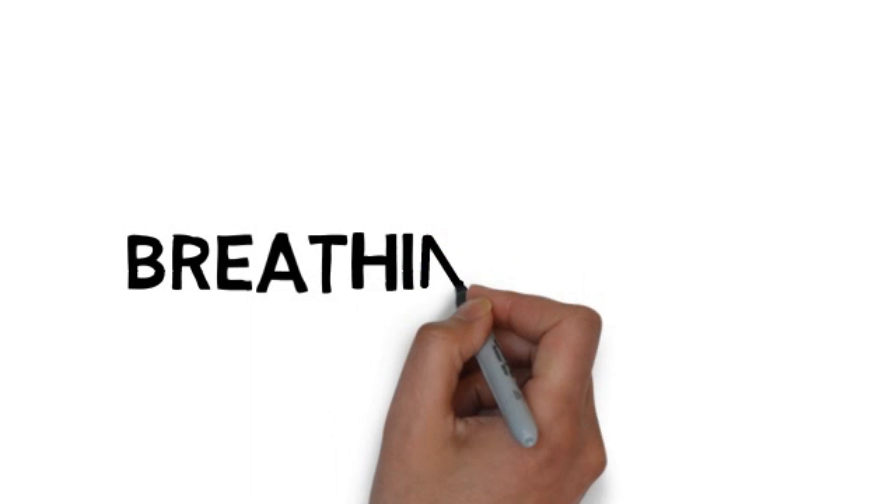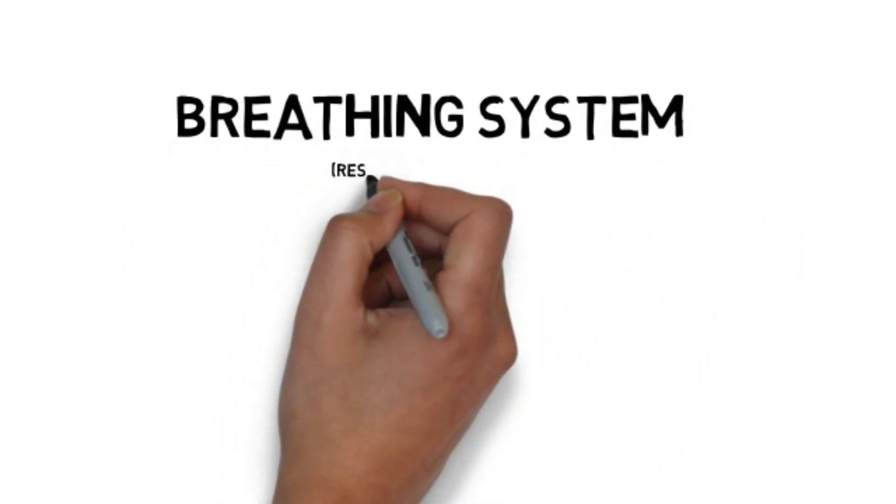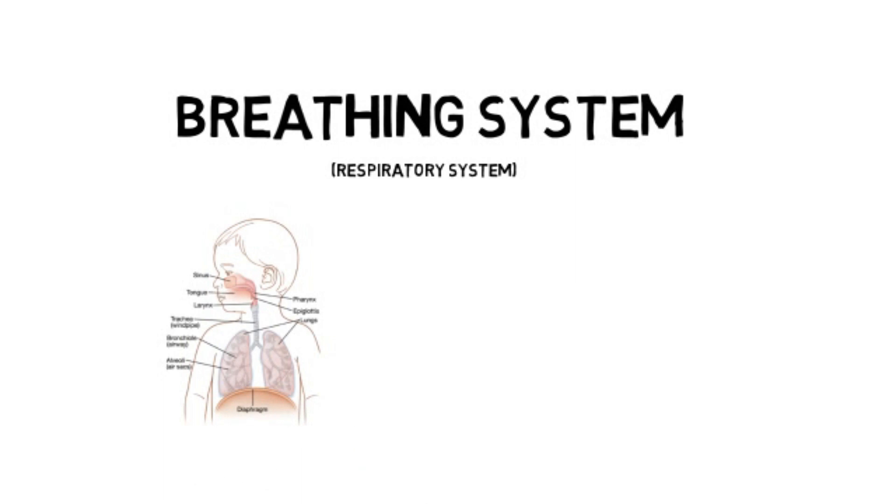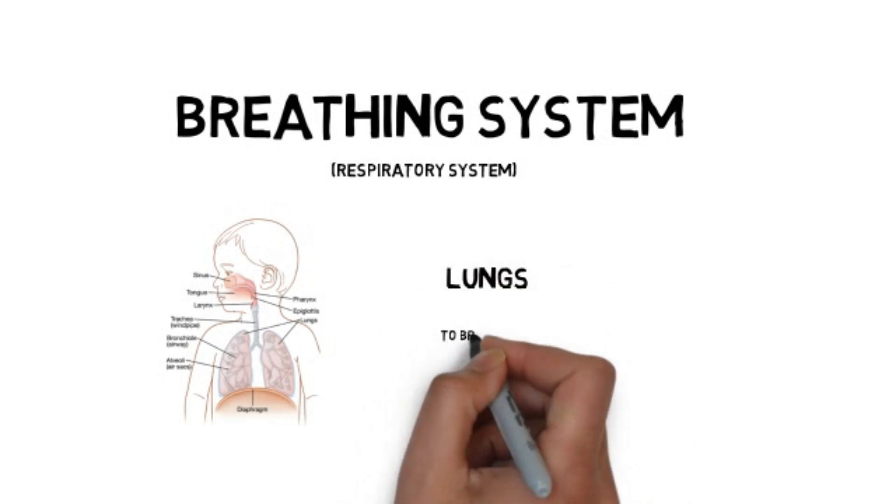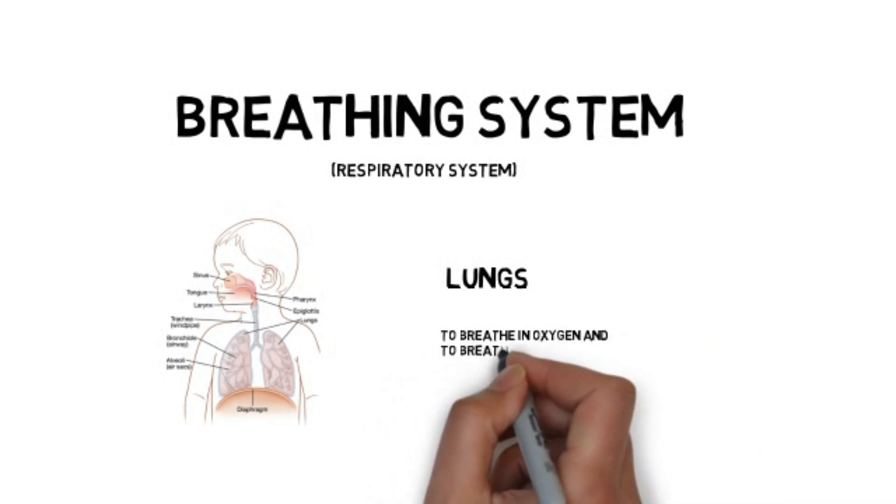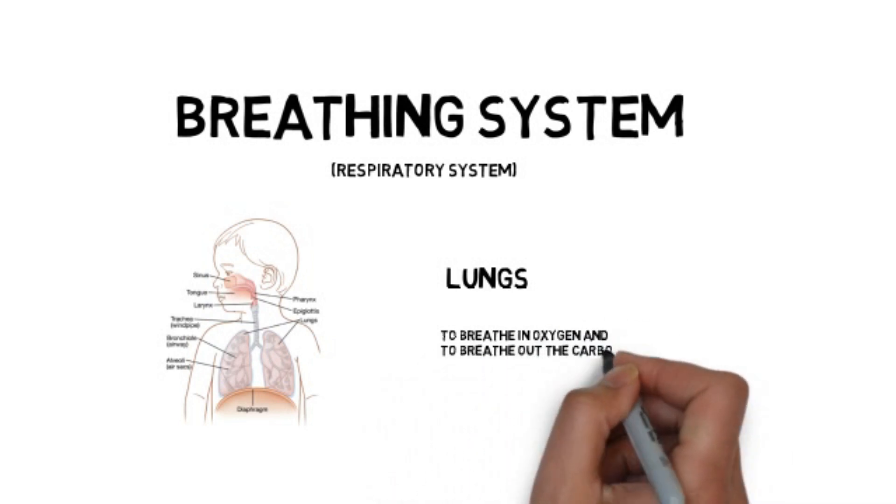Next, breathing system, or what we usually call the respiratory system. This is the picture of the system, and the main organs of the system are the lungs. The function is to breathe in oxygen and breathe out the carbon dioxide.